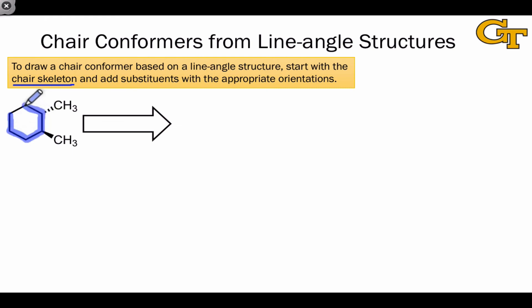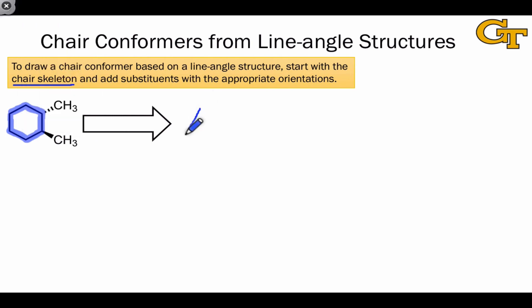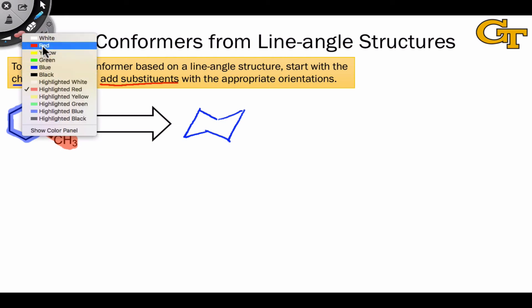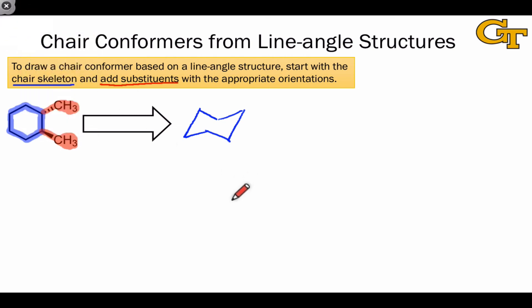We'll start by simply drawing the cyclohexane chair skeleton using the parallel lines method. I like to draw my chair slanting to the right. We next add the substituents — in this case two methyl groups. Where you add the first substituent is not so important. The key thing is that it fixes your viewpoint in drawing the remainder of the structure. Whether you draw that substituent axial or equatorial isn't so important either, as we can always flip the ring to the more stable conformer if needed.